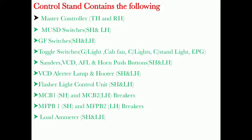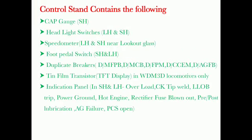Control stand items: MCB2 LH breakers; MFPB1 SH and MFPB2 LH breakers; load ammeter SH and LH; cap gauge SH; headlight switches LH and SH; speedometer LH and SH near lookout glass; foot pedal switch SH and LH; duplicate breakers; D-bar MFPB, D-bar MCB, D-bar FPM, D-bar CCEM, D-bar AGFB; TFT display in WDM3D locomotives only. Indication panel in SH and LH: overload, CK tip weld, LLOB trip, power ground, hot engine, rectifier fuse blown out, pre or post lubrication, AG failure, PCS open.